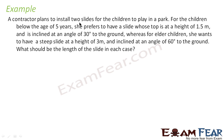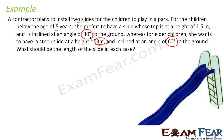A contractor plans to install two sliders for the children to play in the park. For children below five years, he prefers a slider whose top is at a height of 1.5 meters inclined at 30 degrees. For elder children, he wants a steeper slide with a height of 3 meters and an angle of 60 degrees. What is the length of each slide? Let's draw a typical slider — there are two scenarios: in one the height is 1.5 meters, in another it is 3 meters, and the angles differ, so the lengths will also differ.